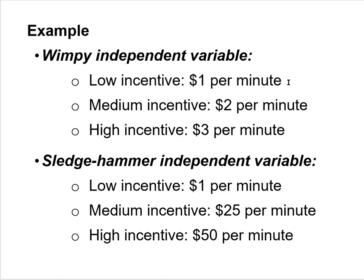A wimpy independent variable: low incentive gets $1 per minute of exercise (so $60 total for 60 minutes per week), medium gets $2 per minute ($120 total), and high gets $3 per minute ($180 total). There's hardly any difference between the amounts given to these three groups. That's probably not going to produce a significant effect at the end of the semester. A wimpy independent variable is bad.